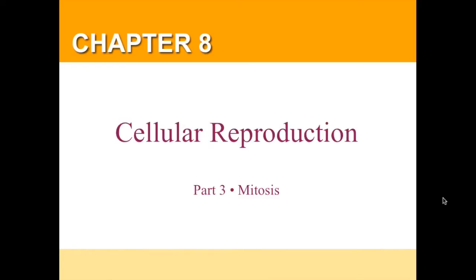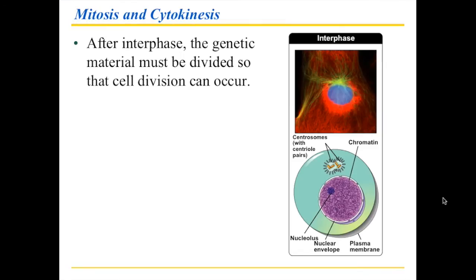Part 3 of Chapter 8 deals with general cell division, also known as mitosis. These next few diagrams show how cells actually go through this process, which includes the organization of the chromosomes and chromosome material, and then the actual process of cell division and how all of this fits together.